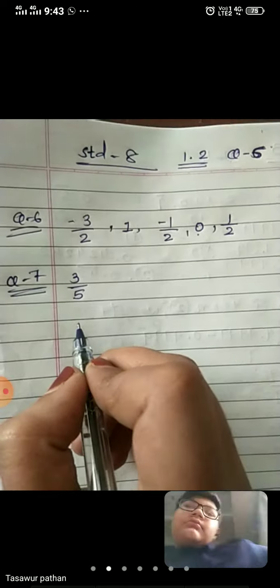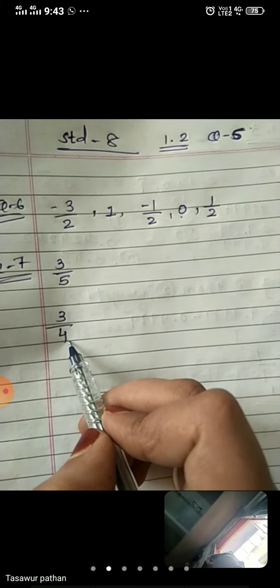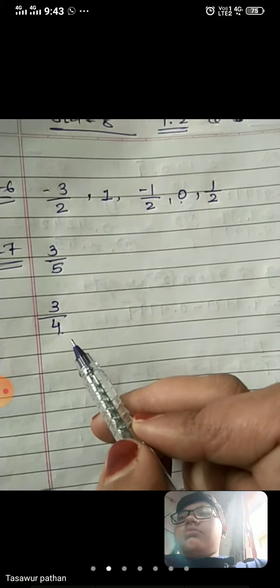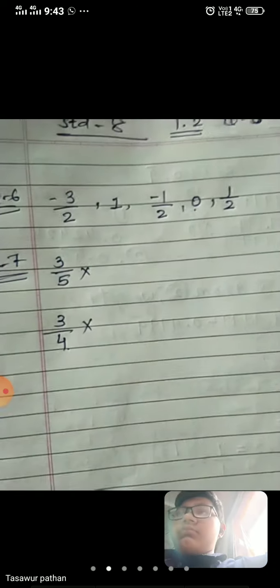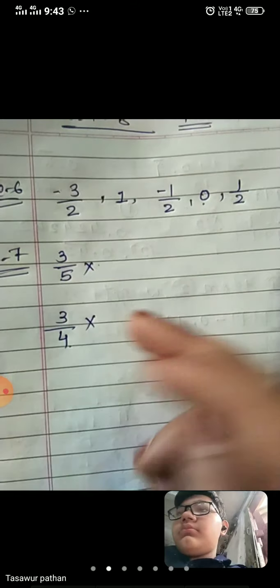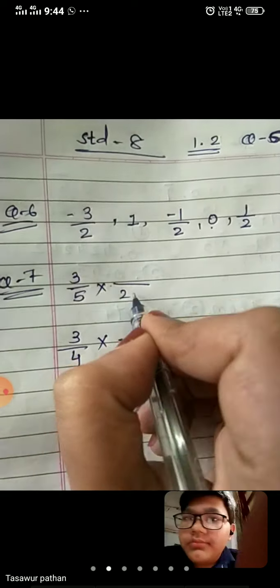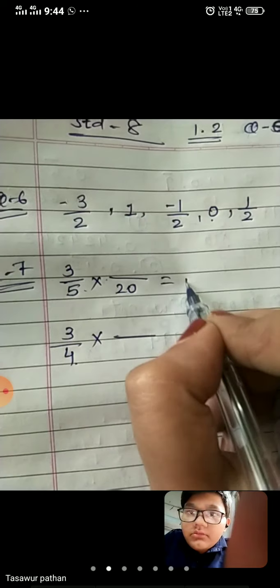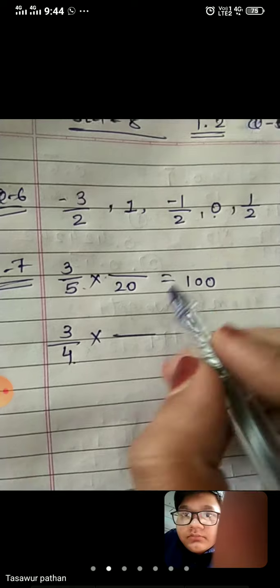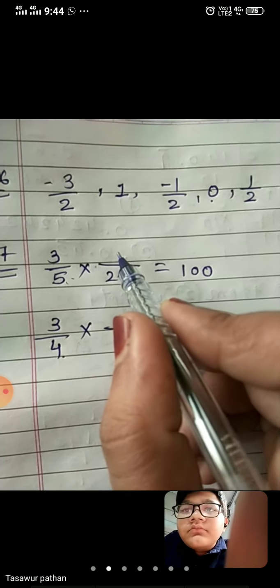So what do we need to do? We have 2 numbers: first is 3 upon 5 and second rational number is 3 upon 4. So first, the denominators are 5 and 4. We need to convert them to the same number. We will multiply such that the difference between the numerators is more than 10. Let's take 20 — 5 times 20 is 100. So if we multiply the denominator by 20, then we will multiply the numerator with 20 also.